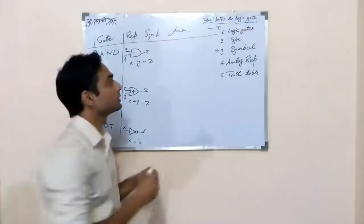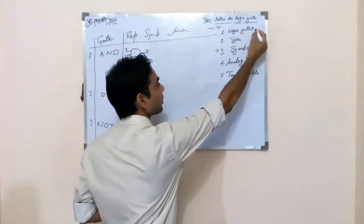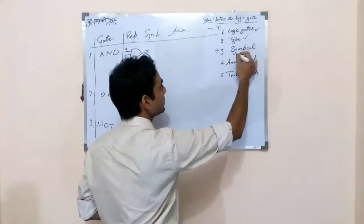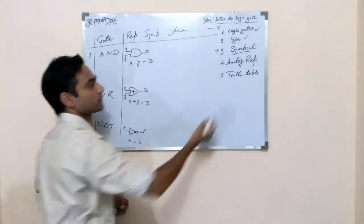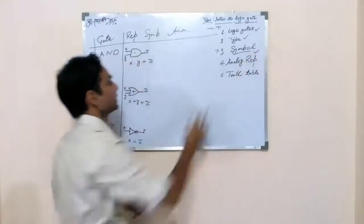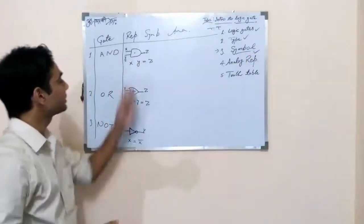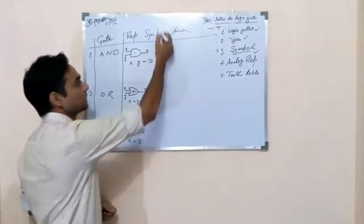Now we know about logic gate, type of logic gate. Now symbol. This is the symbol of our logic gates. Analog representation. How can we represent these logic gates as analog?